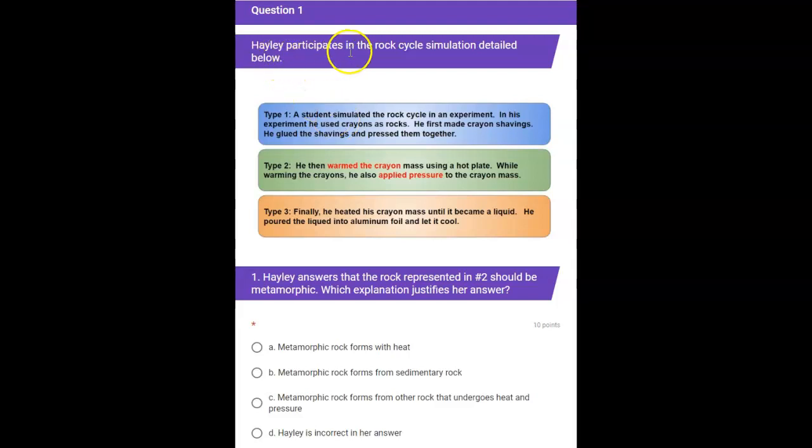Number 1. Haley participates in the rock cycle simulation detailed below. Type 1: A student simulated the rock cycle in an experiment. In his experiment, he used crayons as rocks. He first made crayon shavings, then glued the shavings and pressed them together.